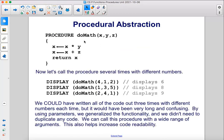All right, now we have procedure do math that accepts three arguments, x, y, and z. Let's call the procedure several times with different numbers. So now we can send 4, 1, and 2, 1, 3, 5, 2, 4, 1, and these will all display different results.